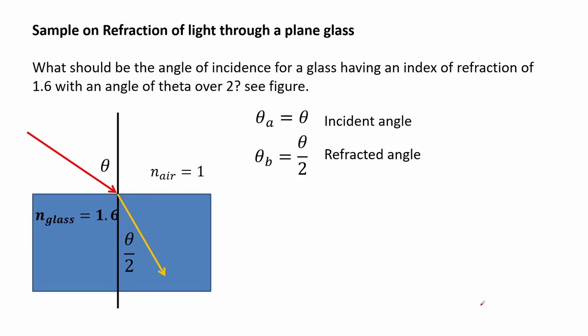Here we have an example on refraction of light through a plain glass. What should be the angle of incidence for a glass having an index of refraction of 1.6 with an angle of theta over 2? See figure for reference.